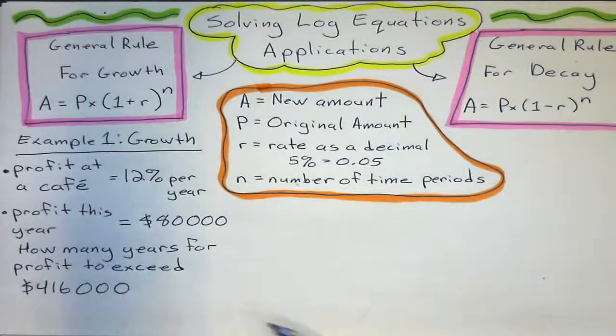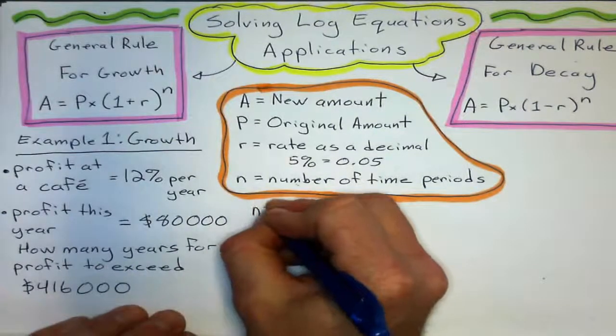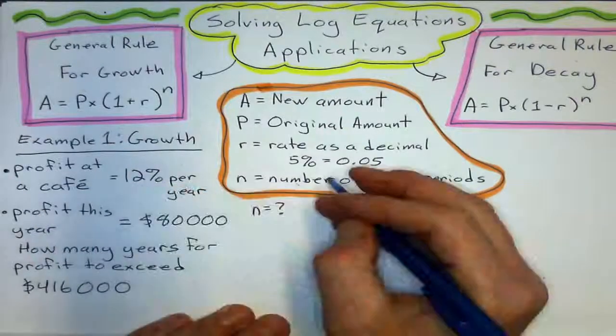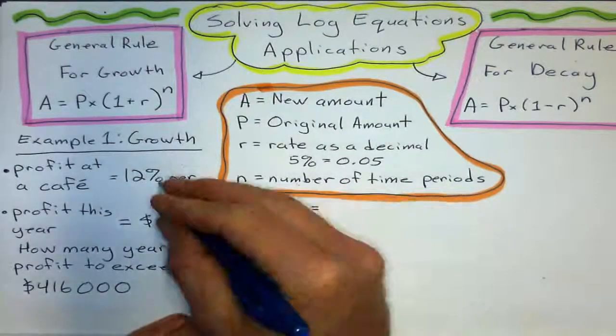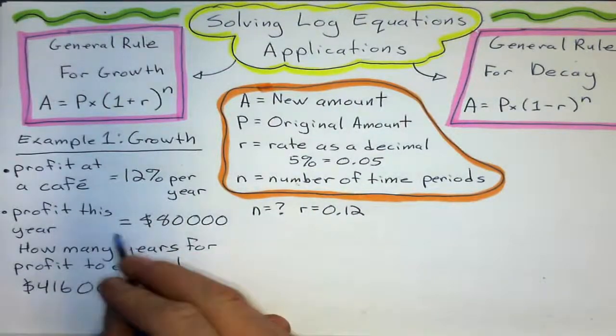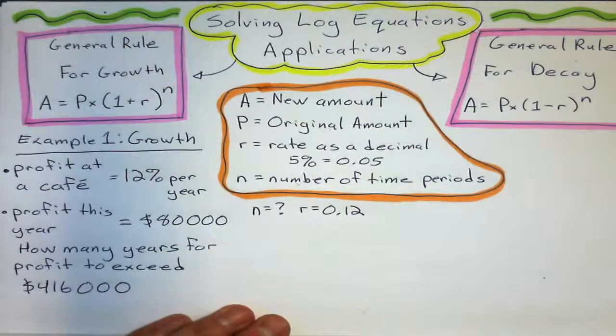Let's say that was pretty successful and they made $80,000. Okay, so for this example, if it says how many years, that means N equals what? The profit that they're making is 12% per year. And as a decimal, that's going to be 0.12.